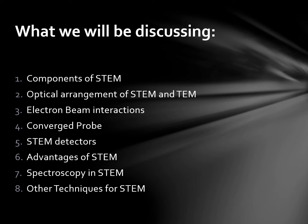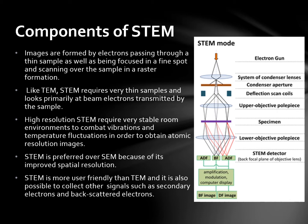Images are formed by electrons passing through a thin sample, focused in a fine spot and scanning over the sample in a raster formation. Like TEM, STEM requires very thin samples and looks primarily at beam electrons transmitted by the sample. High-resolution STEM requires very stable room environments to combat vibrations and temperature fluctuations in order to obtain atomic resolution imaging. STEM is preferred over TEM because of its improved spatial resolution, is more user-friendly, and it is also possible to collect other signals such as secondary and backscattered electrons.